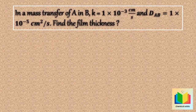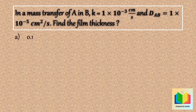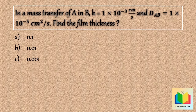Question 2: In mass transfer of A in B, k (mass transfer coefficient) = 1 × 10⁻³ centimeter per second, and Dab = 1 × 10⁻⁵ centimeter square per second. Find the film thickness. Options: (a) 0.1, (b) 0.01, (c) 0.001, (d) data insufficient.